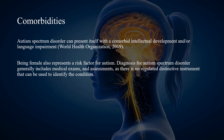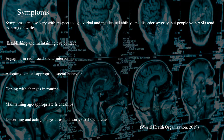Autism Spectrum Disorder can present itself with a comorbid intellectual development and/or language impairment. Being female also represents a risk factor for autism. Diagnosis for Autism Spectrum Disorder generally includes medical exams and assessments, as there is no regulated distinctive instrument that can be used to identify the condition. Symptoms can also vary with respect to age, verbal and intellectual ability, and disorder severity.